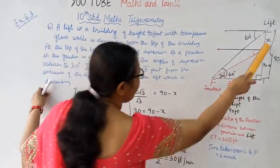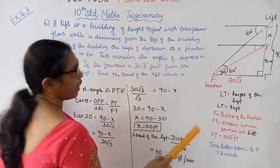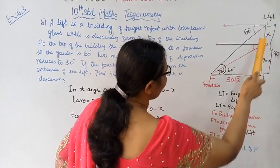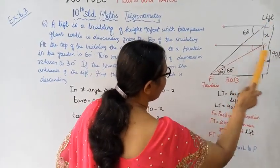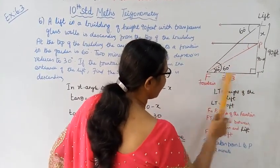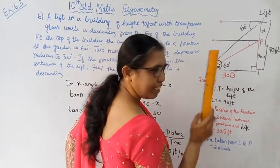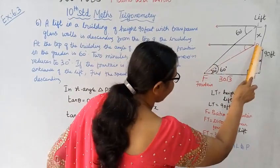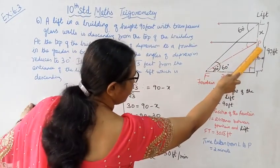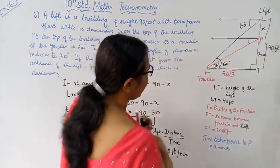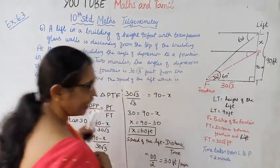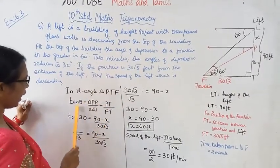In right angle triangle PTF, we use the tangent ratio. Tan of the angle equals opposite over adjacent.